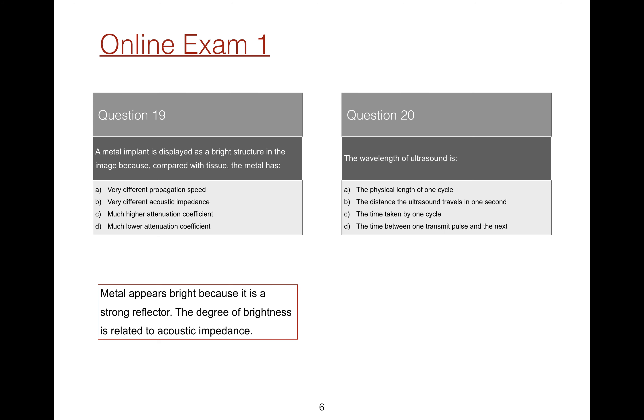Question 20: The wavelength of ultrasound is described how? Well, as the name suggests, the wavelength is the physical length of one cycle, shown on this diagram as being from one peak to the next peak.